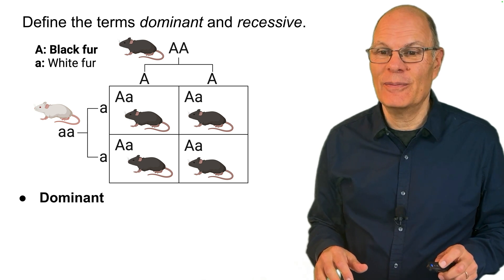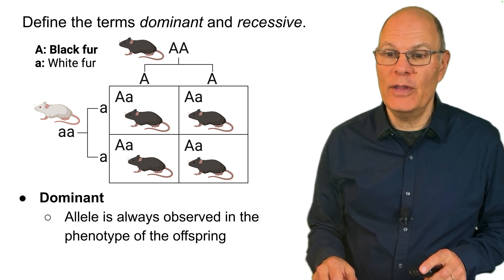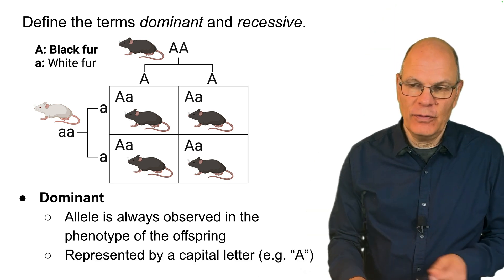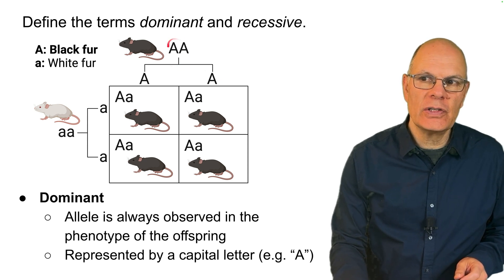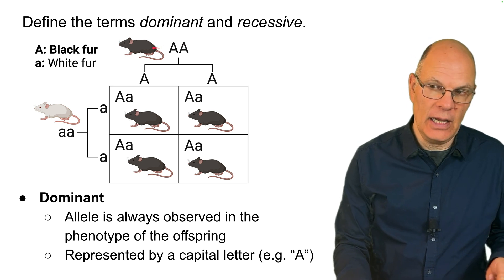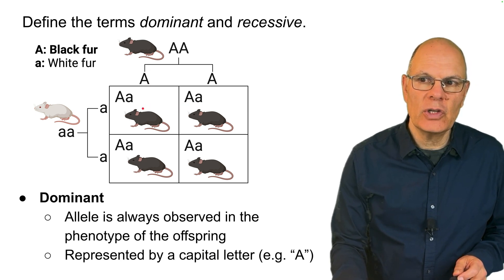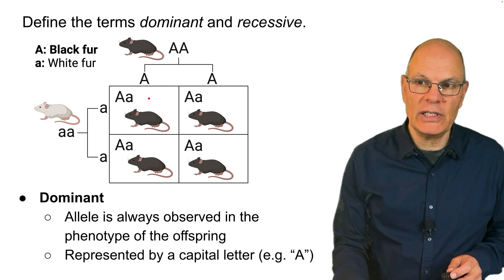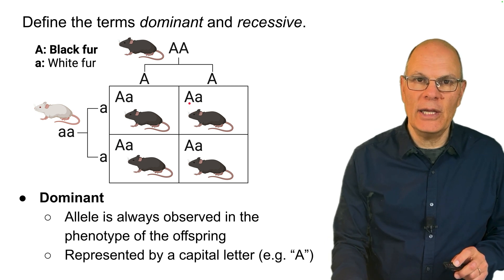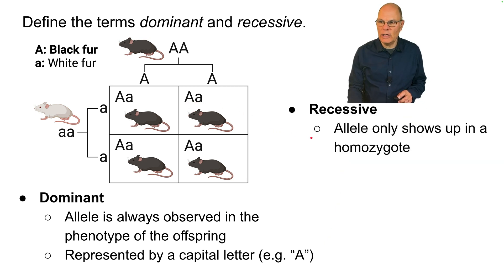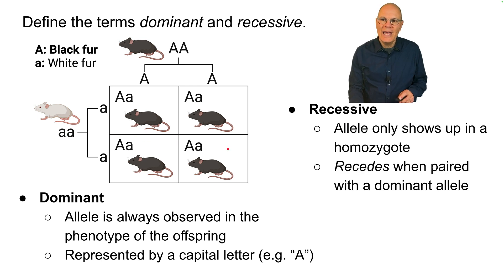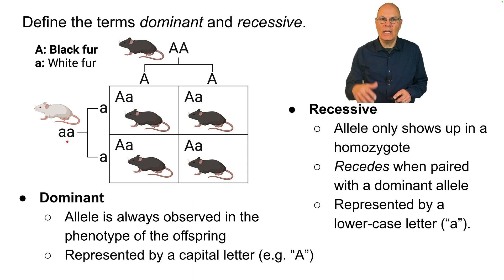Dominant alleles are always observed in the phenotype of the offspring. They're represented by a capital letter — for example, capital A. Here's an individual who's homozygous dominant and expresses the dominant characteristic: dark black fur. In heterozygotes, there's also a recessive allele, but because the dominant allele is present, the characteristics of the organism are determined by the dominant allele. A recessive allele only shows up in a homozygote — this mouse is homozygous recessive and therefore has the recessive appearance. That recessive allele recedes into the background when paired with a dominant allele, and is represented by a lowercase letter, in this case lowercase a.